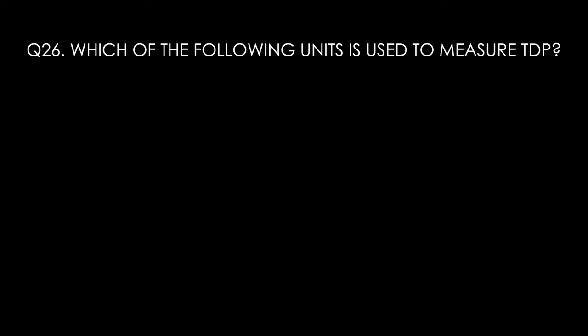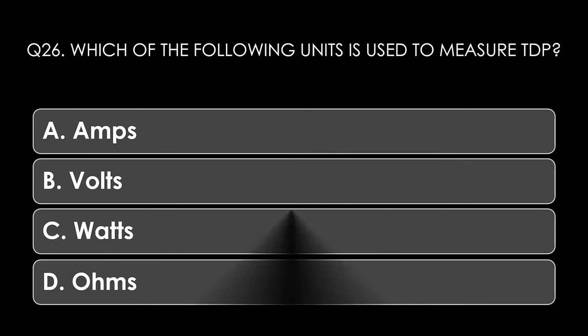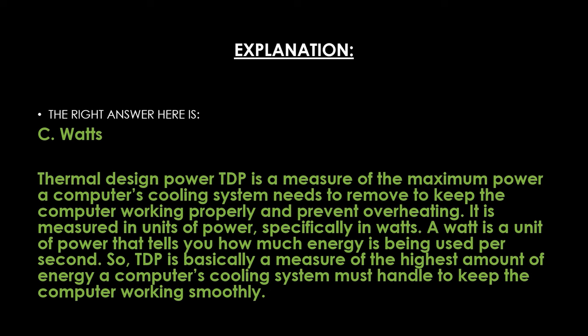Question twenty-six. Which of the following units is used to measure TDP? Options: A: amps, B: volts, C: watts, D: ohms. The right answer is C, watts. Thermal Design Power (TDP) is a measure of the maximum power a computer's cooling system needs to remove to keep the computer working properly and prevent overheating. It is measured in watts — a unit of power representing energy used per second. TDP is essentially the highest amount of energy a computer's cooling system must handle to keep the system running smoothly.